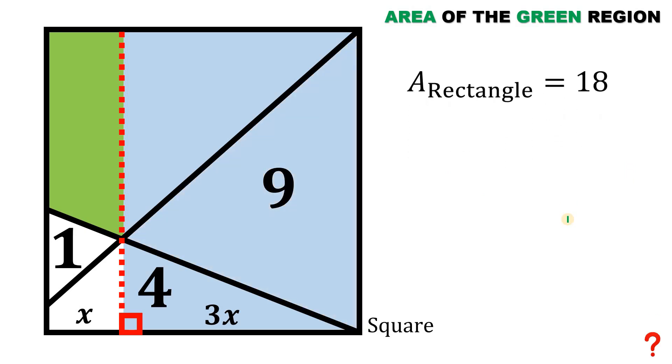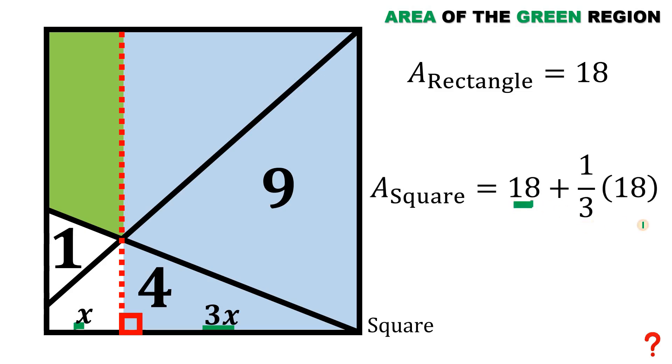Using the area of the rectangle, we can now find the area of the square. Since this is x and this is 3x, to find the area of the whole square, we need the area of this rectangle plus 1 third of this area. One third of 18 is 6. And 18 plus 6 equals 24. That is the area of the square.